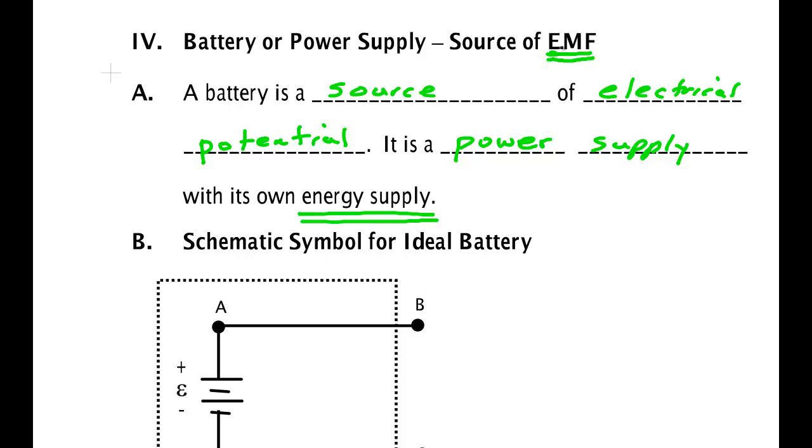But Volta, Alessandro Volta, got to thinking about that. He didn't really believe it had anything to do with some life force inside the leg of this frog. It had to do with the differences between the metals that were touching this frog, and the frog was simply wet, an electrolyte to make the connection.